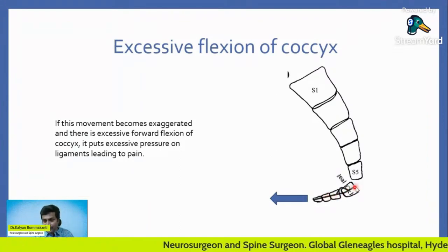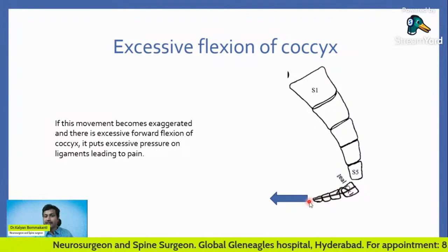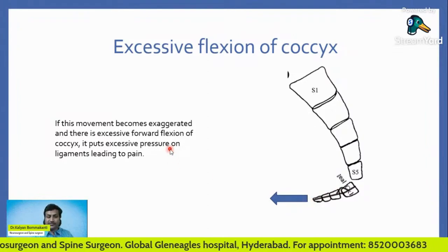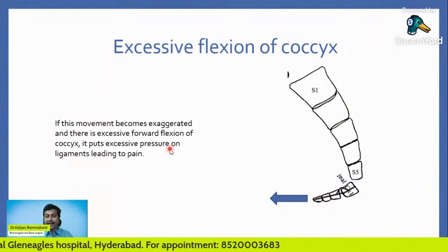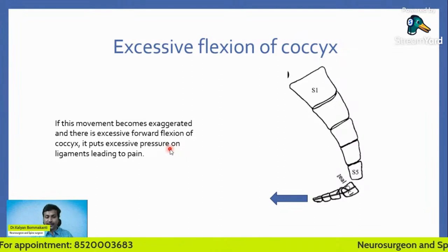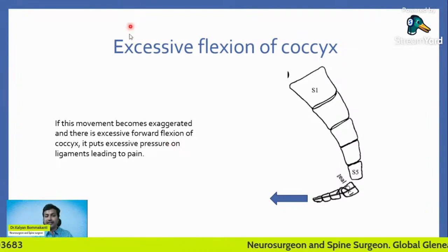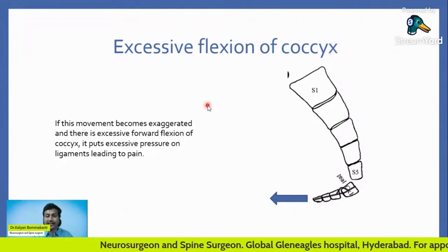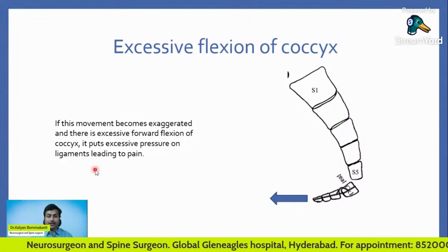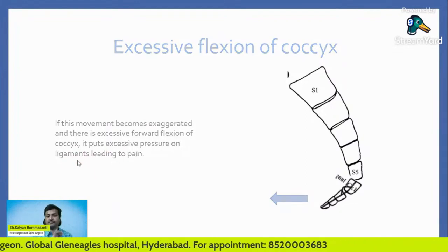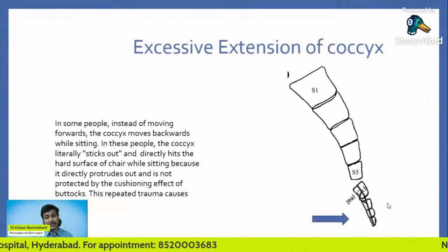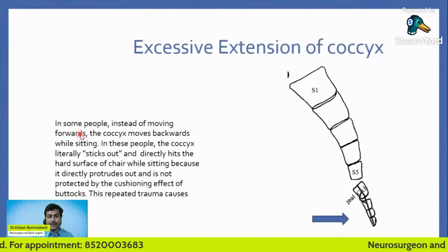Observe this video — the coccyx has moved abnormally forwards. The normal physiological flexion has become exaggerated, and this excessive forward flexion of the coccyx puts excessive pressure on the ligaments, leading to pain. This excessive flexion of the coccyx during sitting in some patients causes excessive pressure on the ligaments, leading to pain.